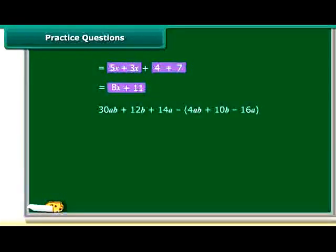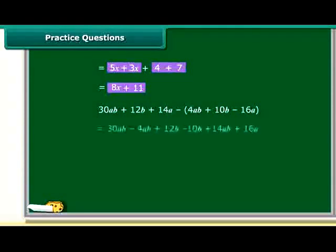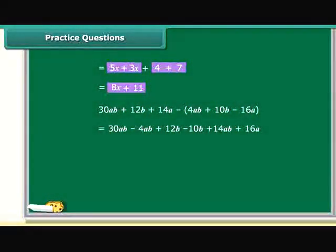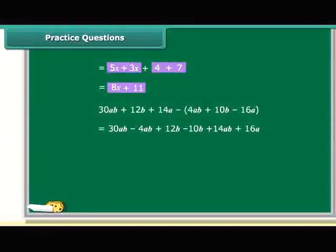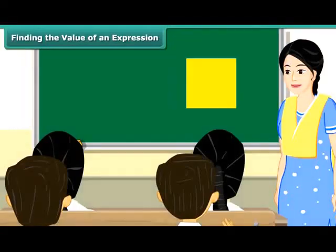Now, the question is to subtract 4ab plus 10b minus 16a from 30ab plus 12b plus 14a. We have to use the same criteria as we used for addition. Bring the like terms together, taking into consideration the sign of the terms. So, on rearranging, we get the result.